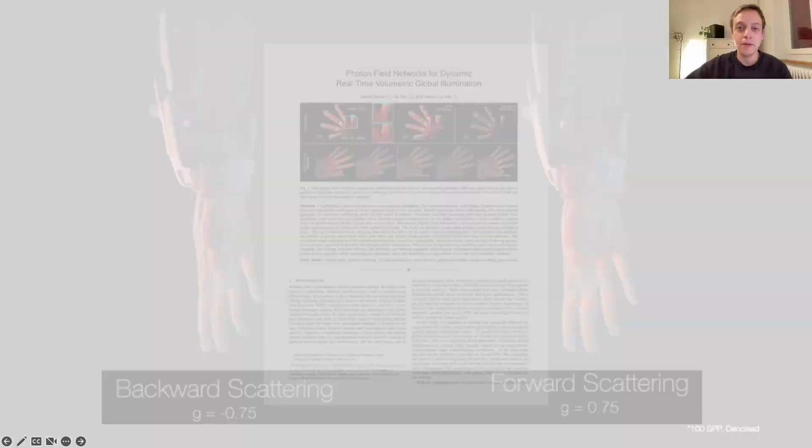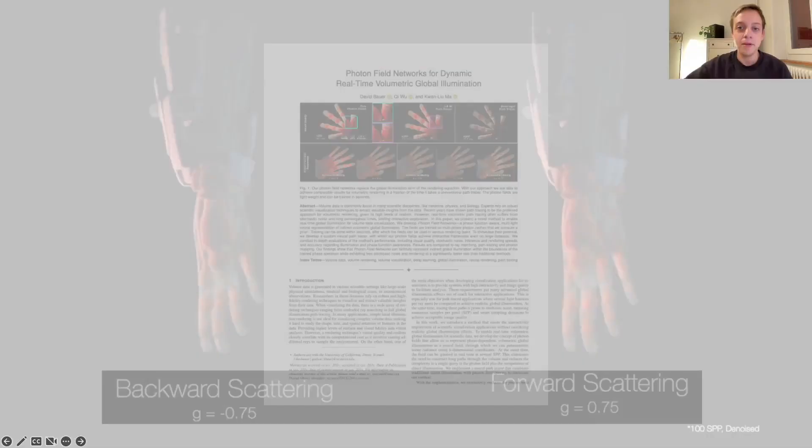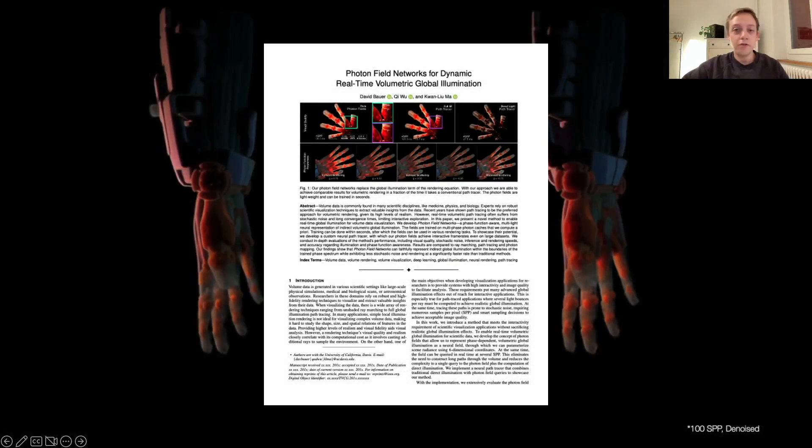In this work we develop a neural rendering technique to cache indirect radiance fields using fast neural networks. With the help of these fields, we can produce convincing volumetric global illumination effects at a fraction of the cost of conventional rendering techniques. The name Photon Fields is derived from the fact that we use photon traces as a data source to train the neural fields.